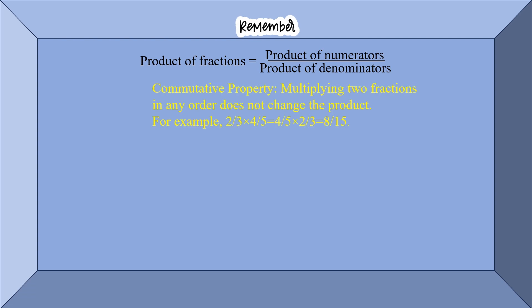Now this is commutative property, that is multiplying two fractions in any order does not change the product. For example, 2/3 times 4/5 is same as 4/5 times 2/3, and you know that it is equal to 8/15.